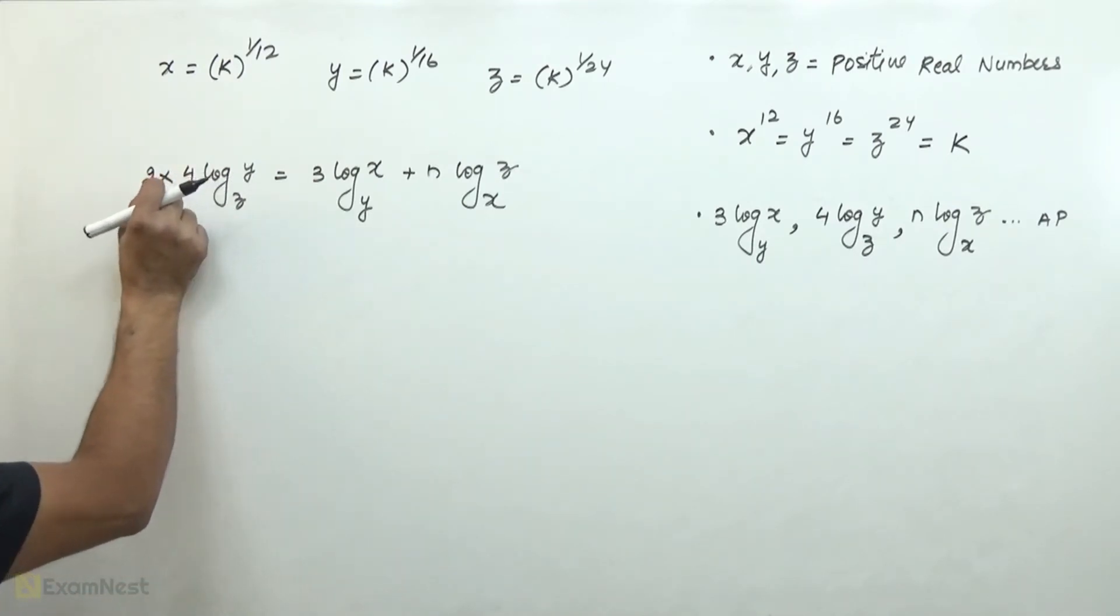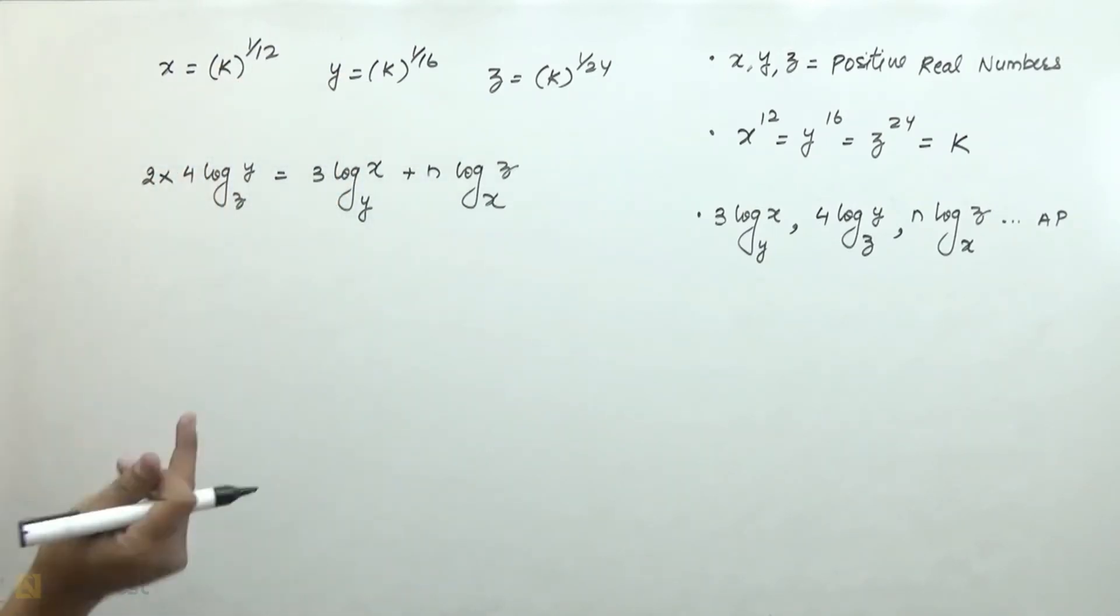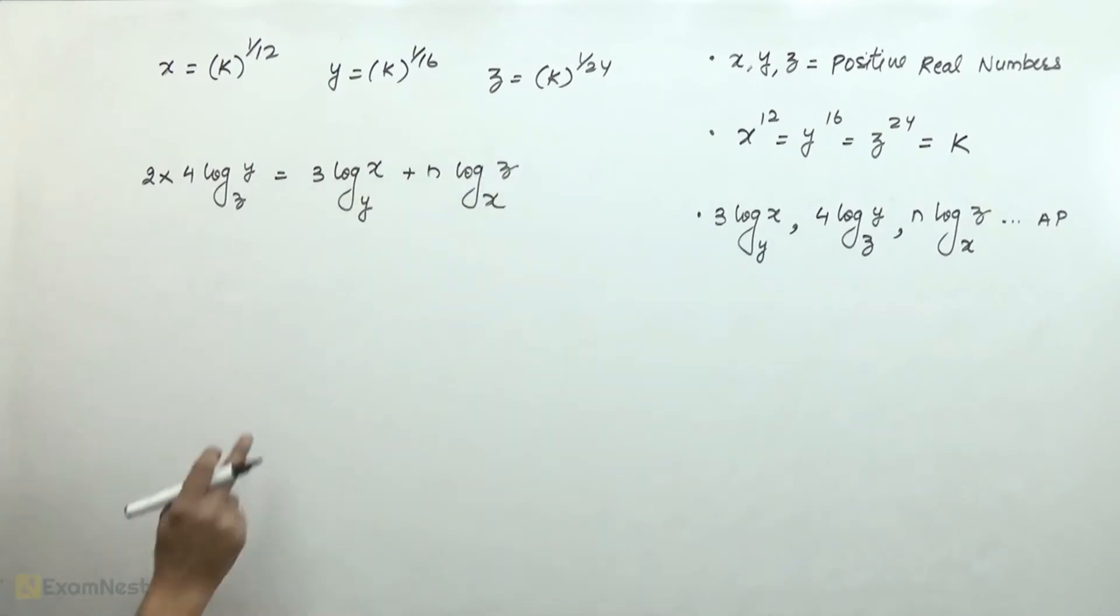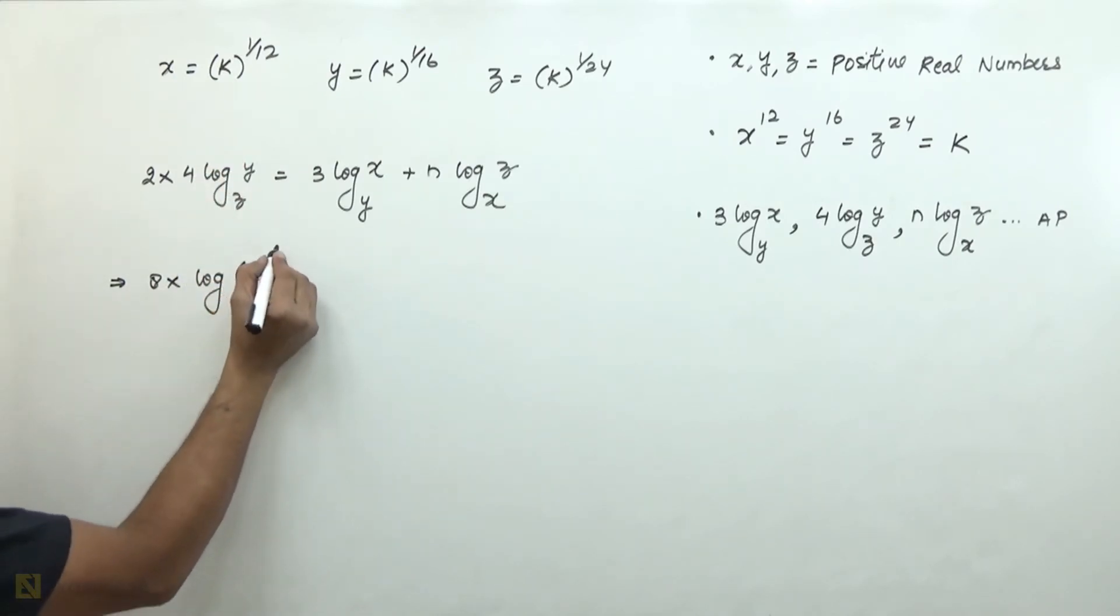So we will substitute the values. Here we can substitute x, y, and z. We will get 8 into log of, for y we will write k raised to the power 1 by 16, and for z we will write k raised to the power 1 by 24